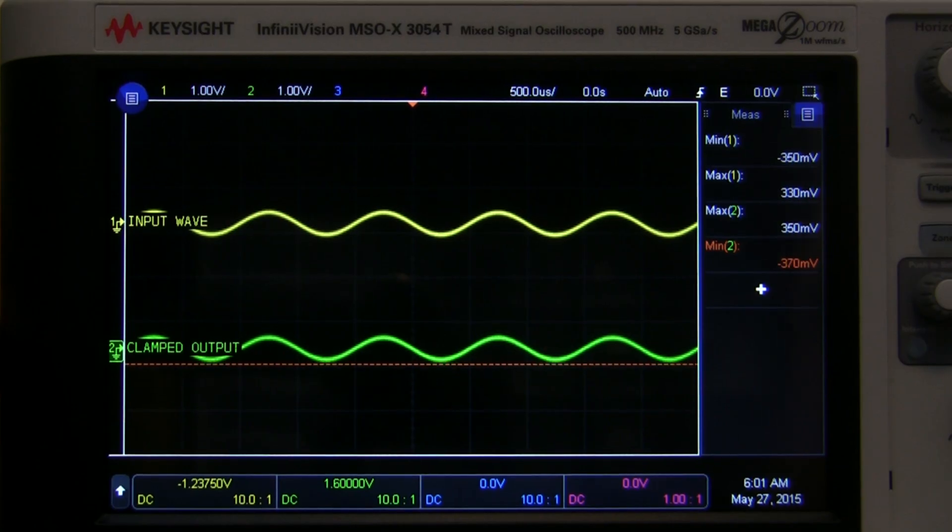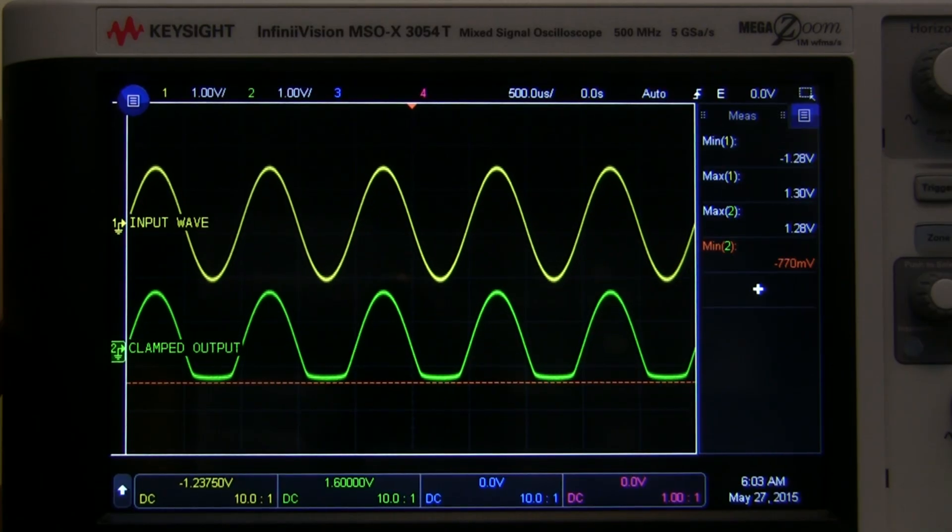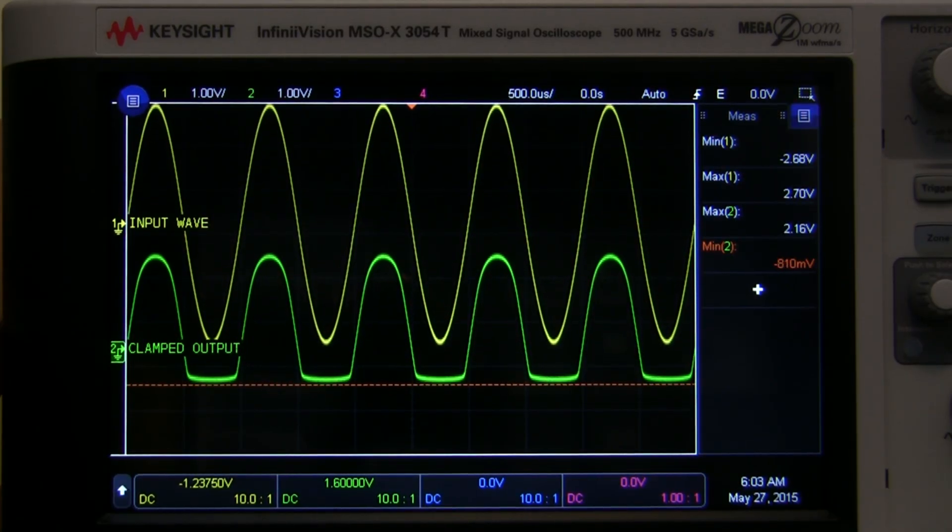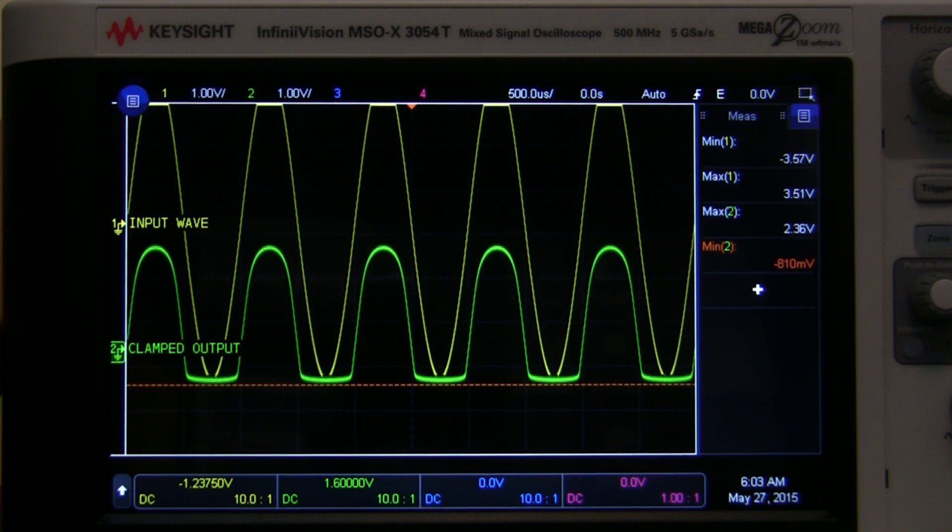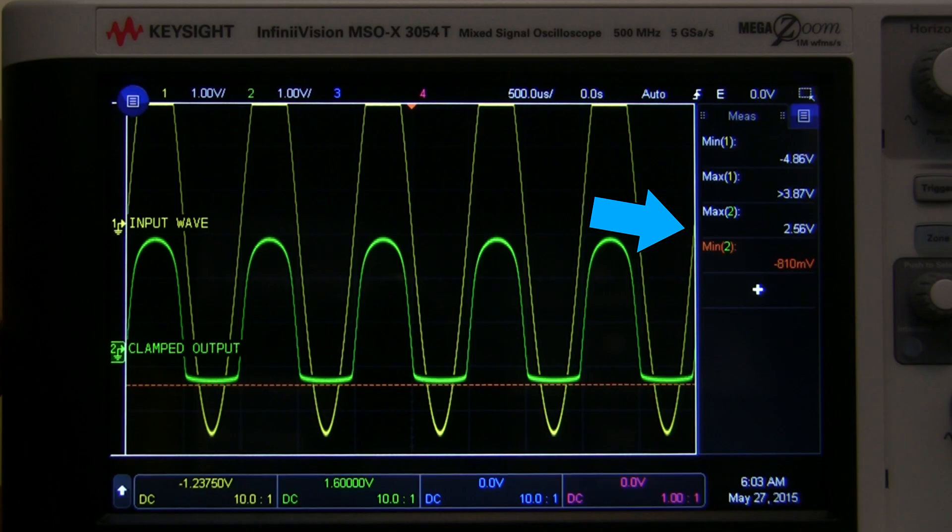For the musicians out there, here's another example with an input sine wave that's between plus and minus half a volt. The Zener diode allows the signal to pass through relatively unchanged. Now watch what happens when we increase the amplitude of the input signal to 10 volts peak to peak. The output gets distorted. The top and bottom of the sine wave get clipped off, and our output is swinging from minus 0.8 volts to plus 2.6 volts.